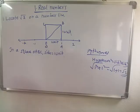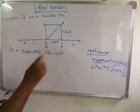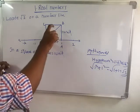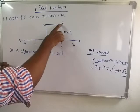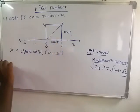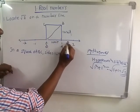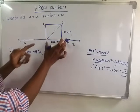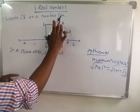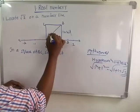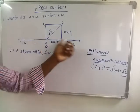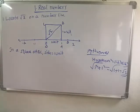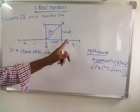Now, using a compass, we draw an arc with center O and radius OB, which cuts the number line at D. So the length of OD equals the length of OB, which is square root two. Therefore, D represents square root two on the number line.